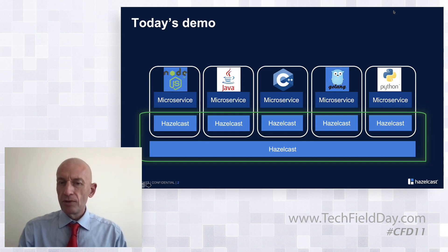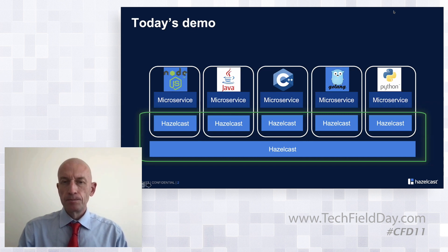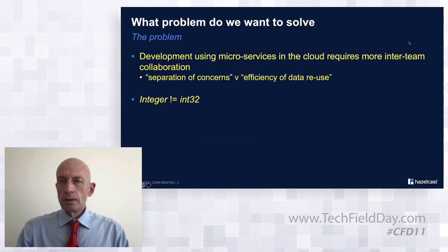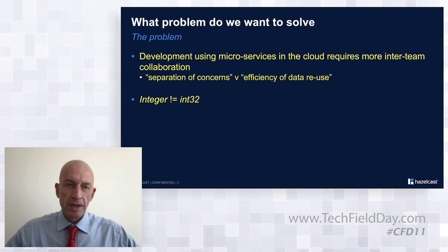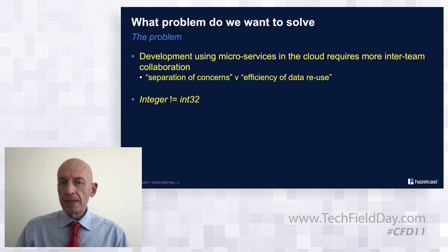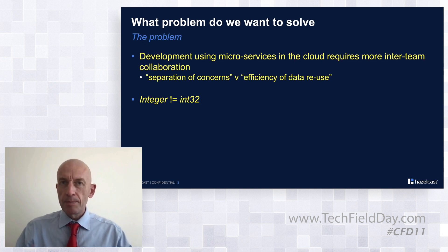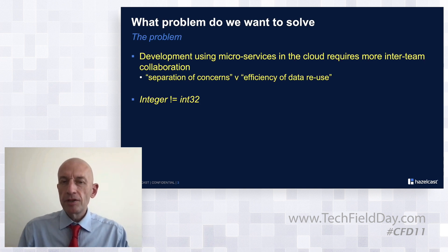They're not communicating with each other; they're communicating with the Hazelcast layer. We have a common data lake that allows them to work with data that other services have produced. The problem we want to solve — a difficult one for microservices — is you want to be separate but also efficient, using results from other systems. You keep data apart as much as possible, but you don't need multiple copies because you can share it. We want different teams working with the same data in an efficient manner.